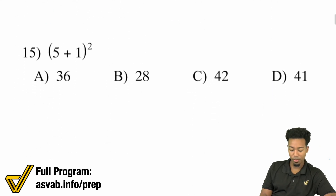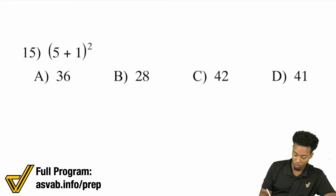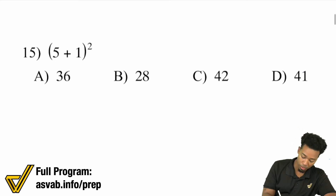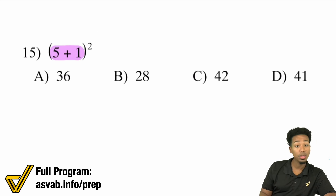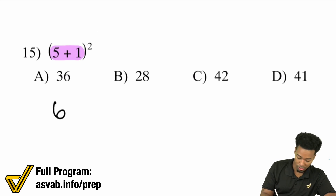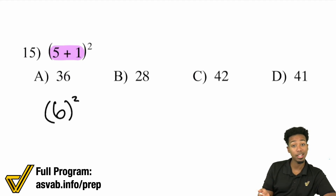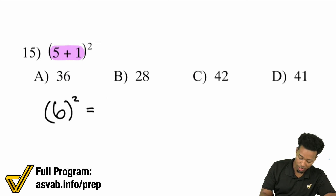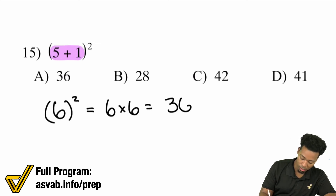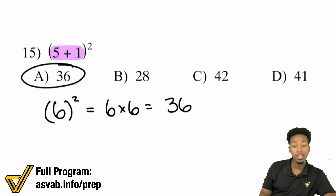Number 15: We have (5 plus 1) all to the power of 2. Remember, what we work on first is parentheses, and then the exponent comes second. So 5 plus 1 is going to be 6, and we have 6 squared. The exponent tells you how many times you're multiplying that number by itself, so that will end up being 6 times 6, which is 36. And that's answer choice A.